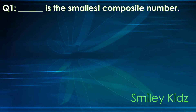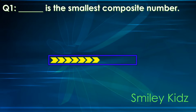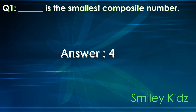Question number 1. Dash is the smallest composite number. Your time starts now. Your time is up. The correct answer is 4. 4 is the smallest composite number.